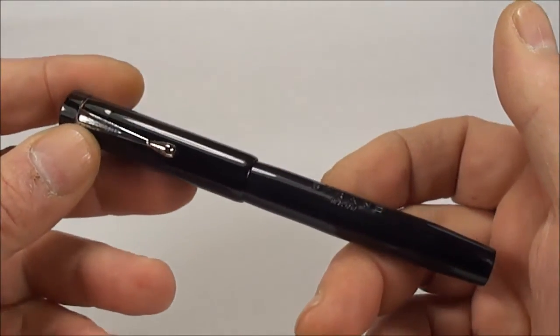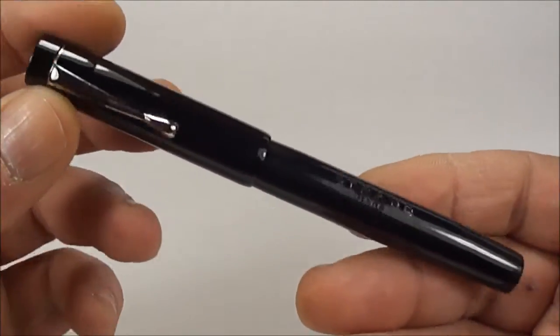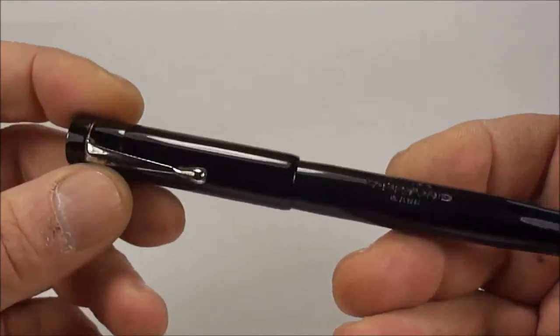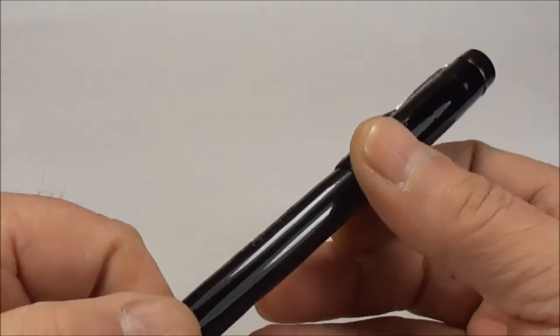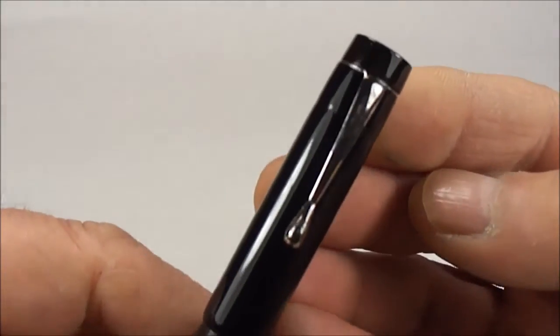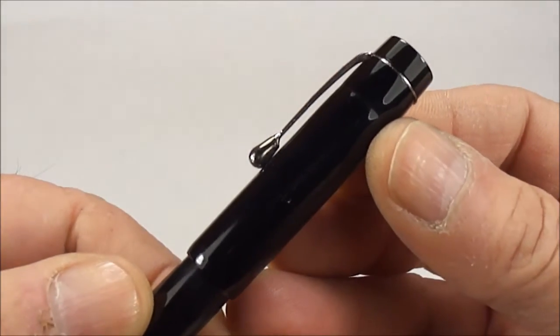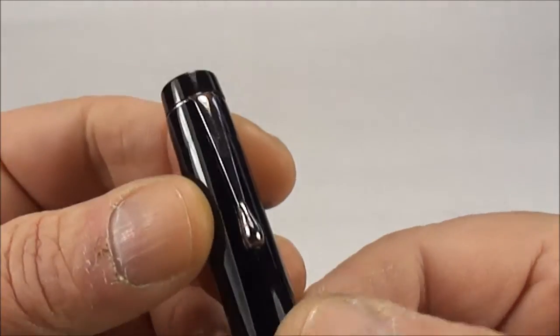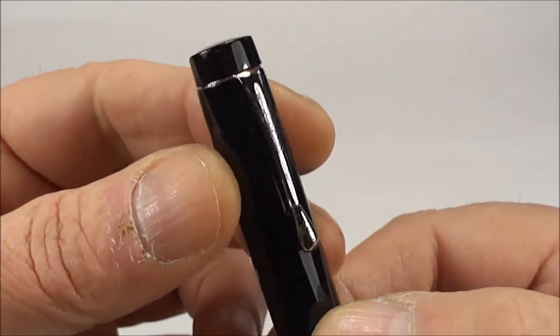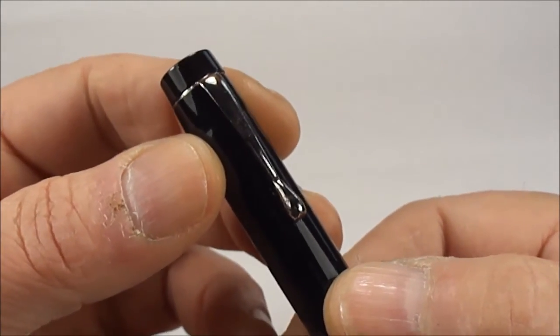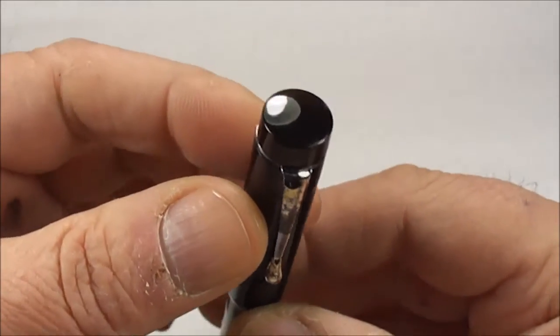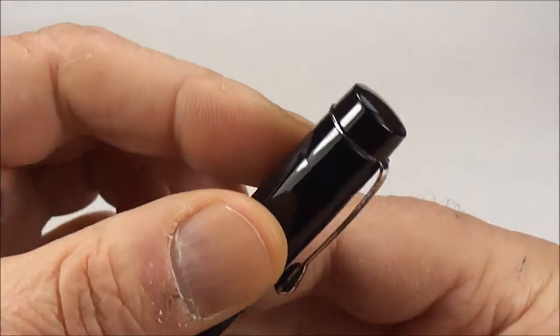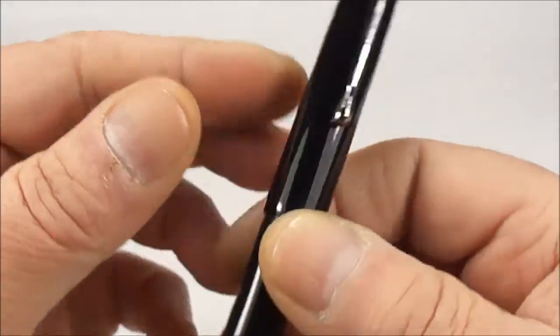It comes in black hard rubber with nickel plated trim. It's got what we term as a teardrop clip to the very top of the pen there. You can see it's got a little bit of pitting, which is understandable for a pen from the 1930s. To the very top there it's got this sort of flat top stud.